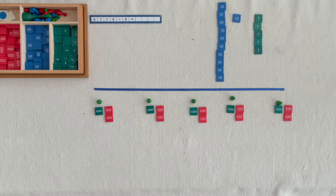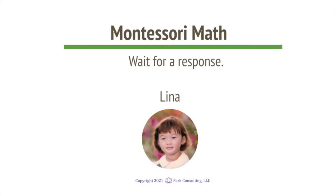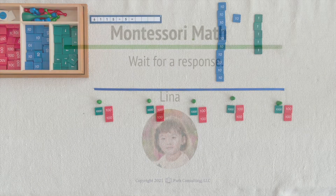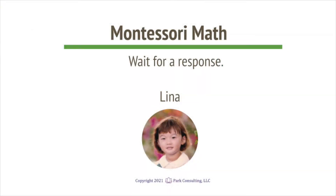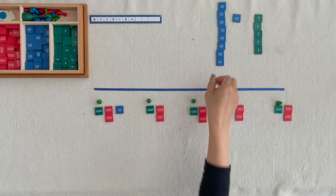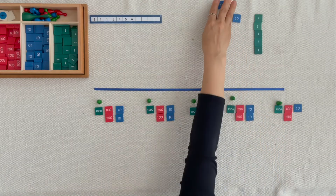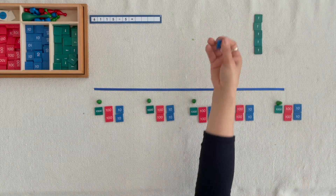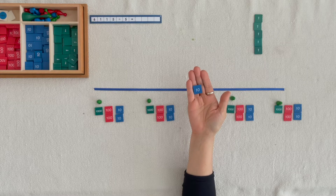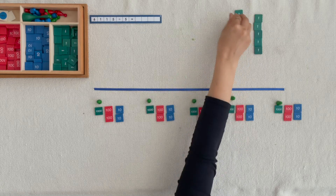Does each Skittle have the same amount? How many hundreds does each have? 1 for you, 1 for you, 1 for you, 1 for you. We cannot divide 1 ten equally among 5 Skittles, so we're going to exchange it for 10 units.